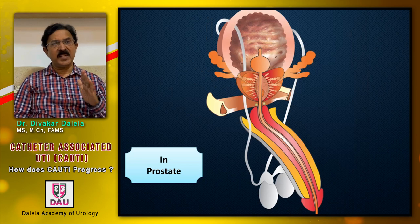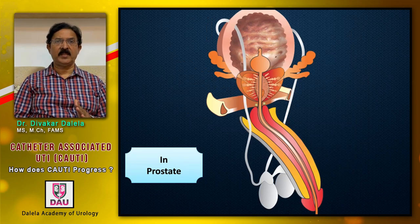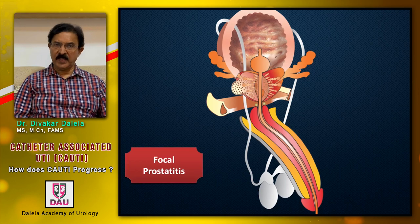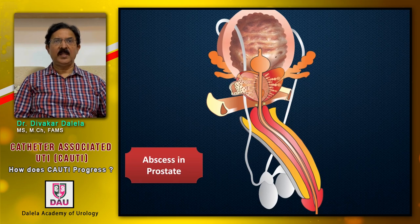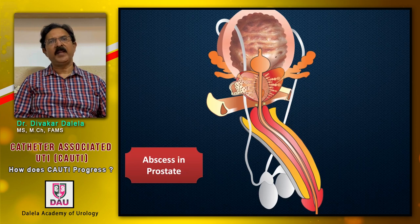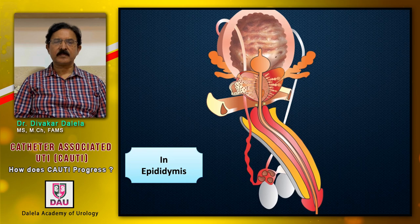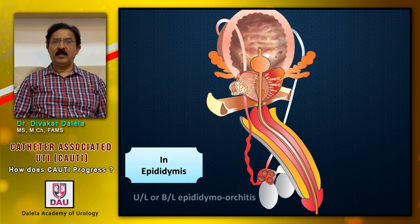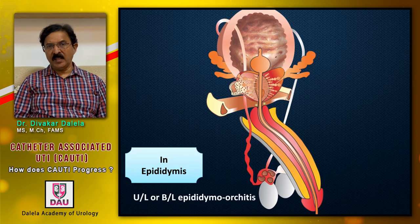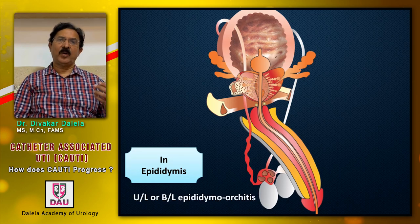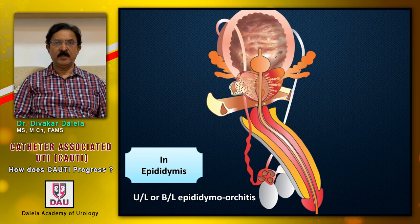The prostatic ducts can also get blocked by the shaft of the catheter, leading to either focal non-suppurative prostatitis or, if it stays longer, an abscess in the prostate. I have seen a large number of diabetic males with an indwelling catheter who develop prostatic abscesses. In the epididymis, as mentioned, you can get unilateral or bilateral epididymorchitis, which can be non-suppurative or suppurative depending on how long the infection has been present.